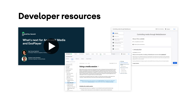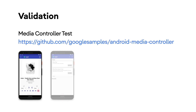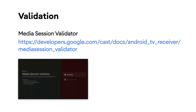Once your implementation is complete, there are a few techniques for validating that things work correctly. The Media Controller Test app allows you to test the intricacies of media playback on Android and helps verify your media session implementation. Its verification testing framework offers one-click tests that you can run to ensure that your media app responds correctly to a playback request, which works both on mobile devices and on TV. Media Session Validator is a tool that provides an easy and automated way to verify your media session integration on Android TV, and it also verifies the prerequisites of supporting Cast Connect in your TV app.